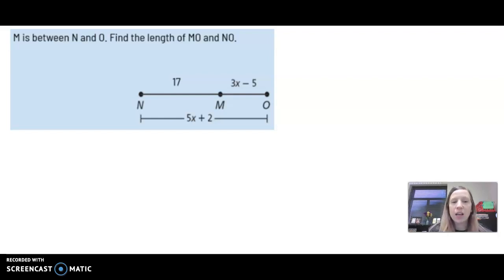So in this case, it would be the length of segment NM plus the length of segment MO will equal the length of segment NO, the entire length. Okay, so all we have to do is replace each one.